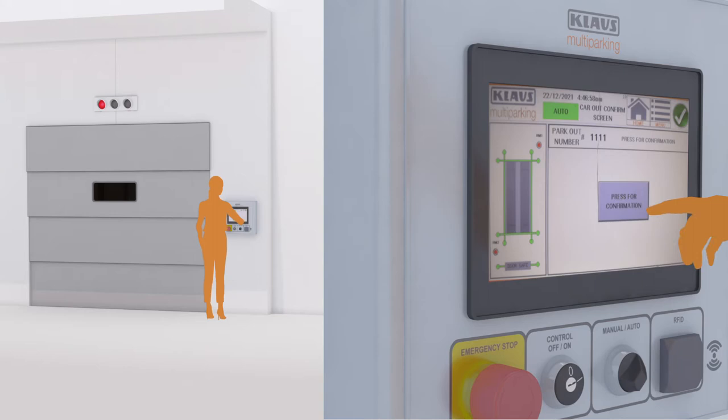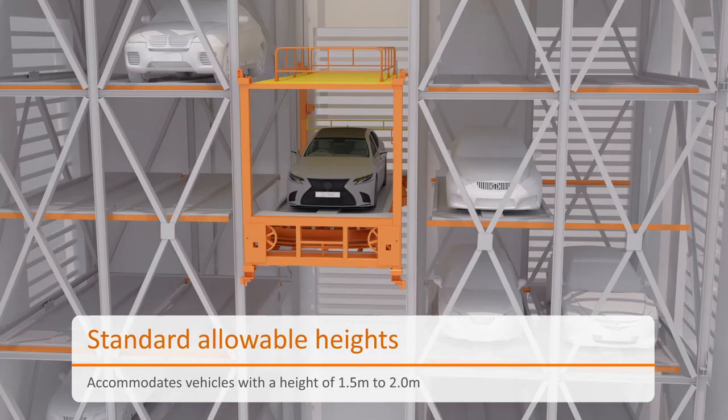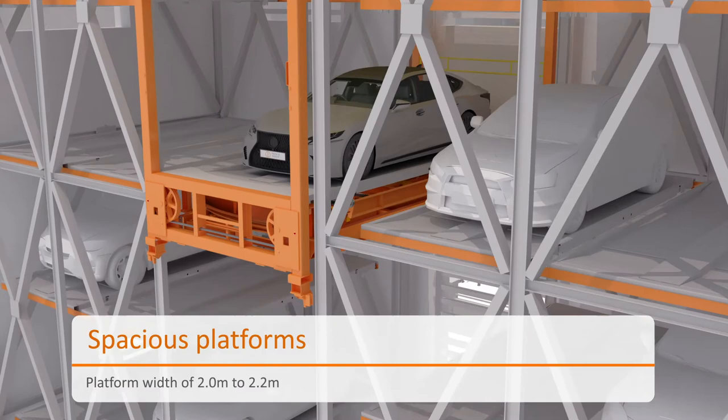The pallets are designed to occupy cars with a height of 1.5 meters to 2 meters. Wide platform width of 2 meters to 2.2 meters welcomes all types of standard passenger cars. The system can occupy vehicles that weigh up to 2.5 tons.